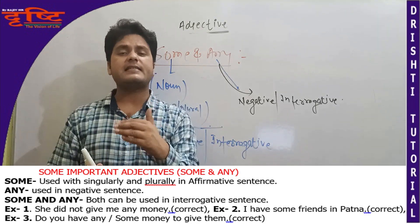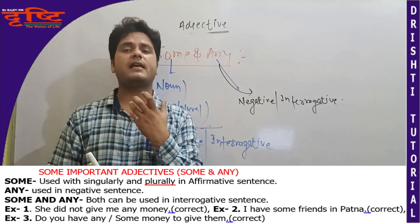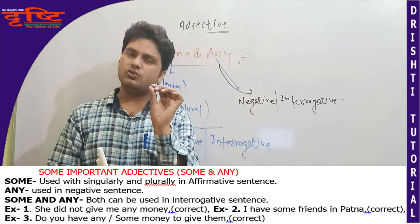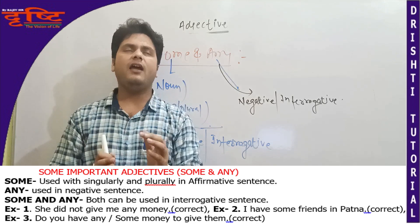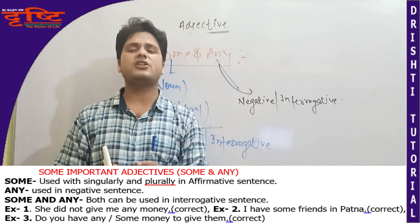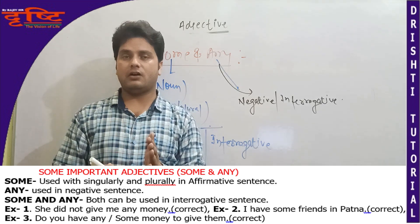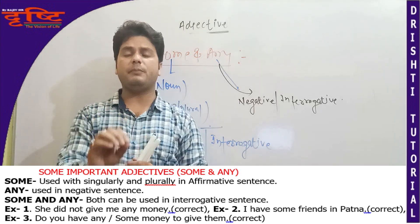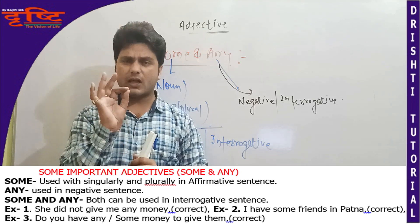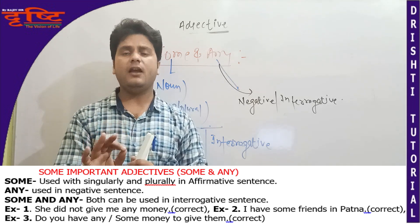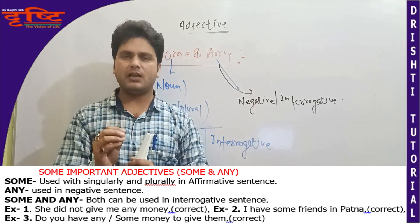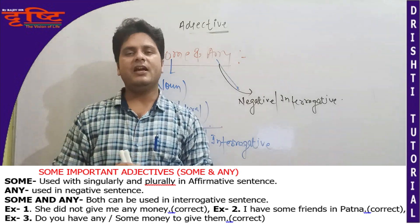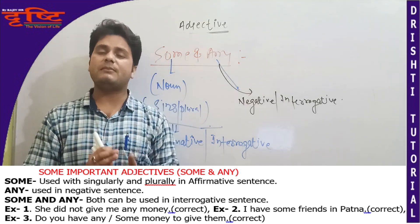Do you have any money — iska matlab hai 'kya aapke paas ek bhi paisa hai?' — thodi negativeness ke saath. Aur agar aap bolein 'Do you have some money' — iska matlab hai 'kya kuch paise hain?' — isme thodi positiveness jhalakti hai. Is tarah 'some' aur 'any' ke beech mein sense mein fark hota hai. Aaj ka class yahi samapt karte hain. Saare rules next videos mein milenge. Thank you very much.